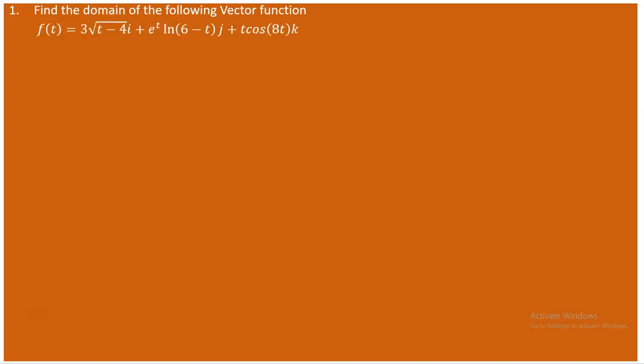The first function f(t) is given by 3√(t-4) i + e^t · ln(6-t) j + t·cos(8t) k. This is a vector value function because the output is a vector and the inputs are a subset of the real numbers.